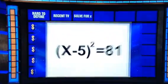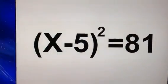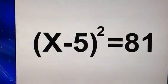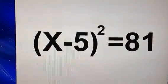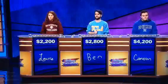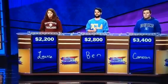Solve for x for 800. x minus 5 squared equals 81. x can be 14 or this number. Cameron. What is 13? No. Ben or Lori? What is negative 4? Back to you though, Cameron.